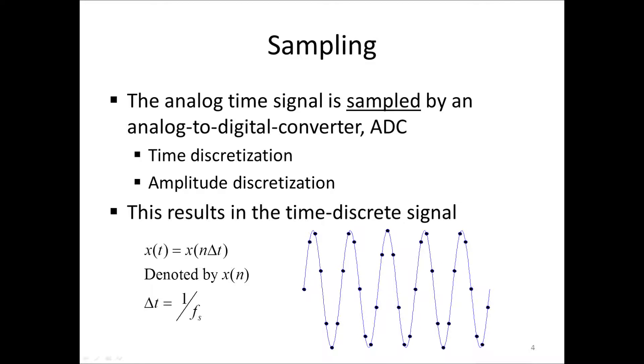Now, the result of the sampling of an analog signal, let's say we have a signal x of t, is that we take the values of x of t at the instances n times delta t, where n is just a sample number. This sampled signal we denote by x of n. Furthermore, delta t, the sampling interval, is of course the reciprocal of the sampling frequency in hertz, which we called f sub s. So, in the plot here, you see the samples indicated by filled circles and the original analog signal is the blue line.